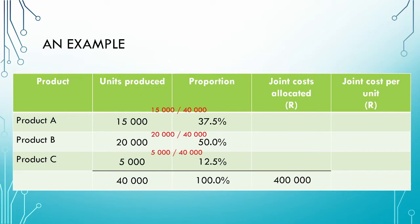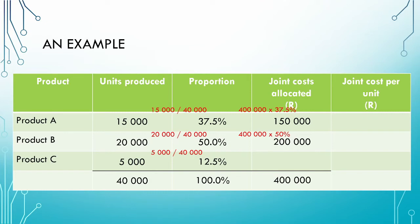We now have the proportion of each product's output to the total output of the joint process. To calculate the joint costs allocated to each product, we take the total joint costs of R400,000 and multiply by each proportion: 37.5% gives R150,000 for product A; 50% gives R200,000 for product B; and 12.5% gives R50,000 for product C.